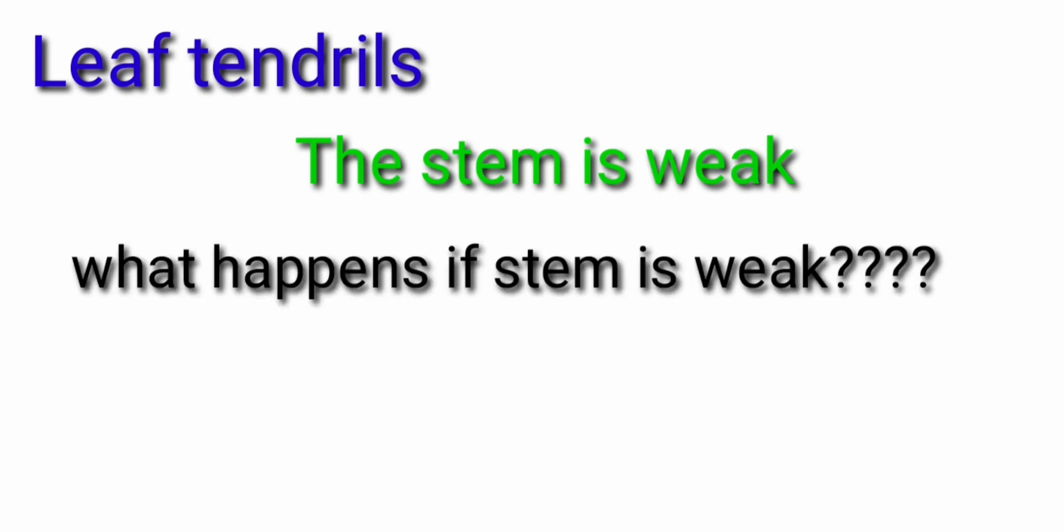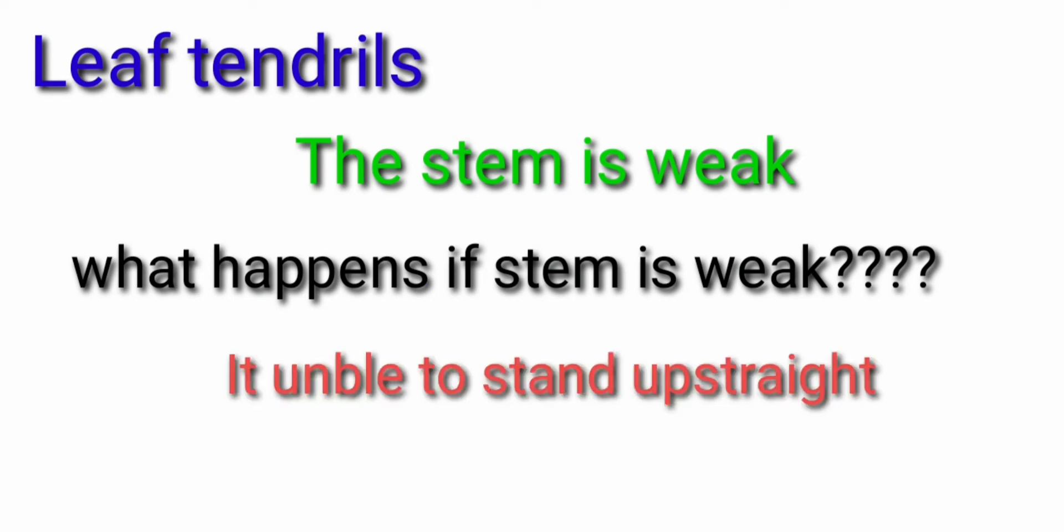First we are going to see about the leaf tendrils. Leaf tendrils are found in weak stemmed plants. What happens if the stem is weak? Yes, it is unable to stand upright. Then obviously it is unable to trap the sunlight at a maximum range.